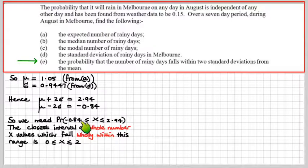The closest interval of whole number X values which fall wholly within this range is, taking minus 0.84, we can go for X equals 0. That's the closest one you can get to this one at the minimum end. And X being 2 is the closest you can get at the maximum end. You couldn't pick 3 because 3 would be more than 2.94. X is allowed to go minimum value 0, maximum value 2, to fit into that interval.